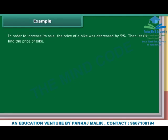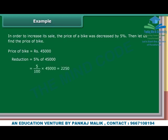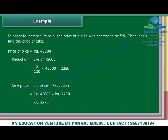In order to increase its sale, the price of a bike was decreased by 5%. Let us find the price of the bike now. Price of a bike is Rs. 45,000. Reduction equals 5% of Rs. 45,000, which is equal to Rs. 2,250. New price equals Rs. 45,000 minus Rs. 2,250, which is equal to Rs. 42,750.